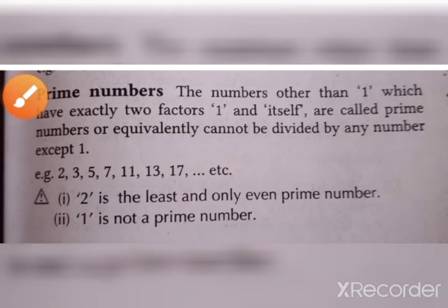For prime numbers, the numbers other than 1 which have exactly two factors. Prime numbers are numbers that can be divided by 1 and the same number only. The first prime number is 2, 1 is not a prime number. 2 is the least prime number and 2 is the only even prime number.